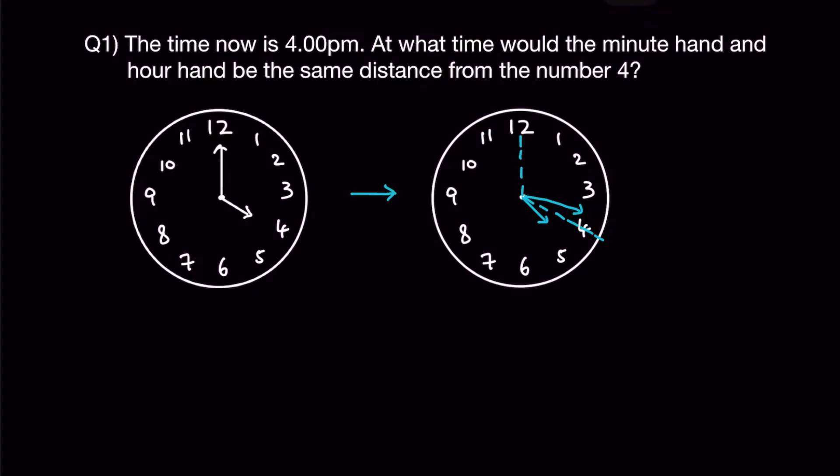This is a question related to time. The time now is 4pm. At what time would the minute hand and hour hand be of the same distance from the number 4? The clock on the left shows 4pm and the clock on the right shows the condition in the question — when the minute hand and hour hand are equidistant from number 4.